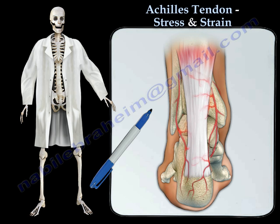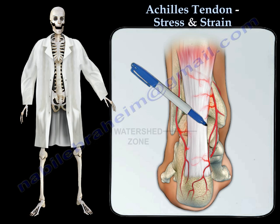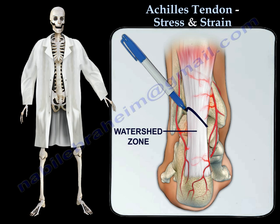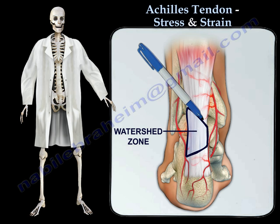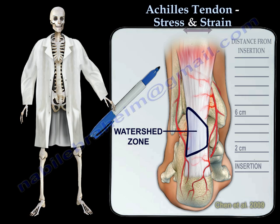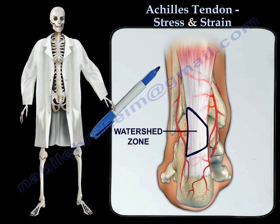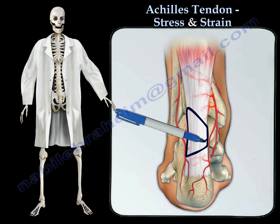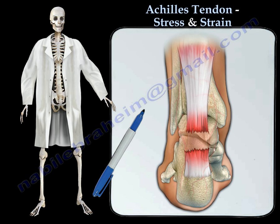Like all tendons, the Achilles tendon does not have great vascularity. The watershed zone is the part of the tendon that has the worst blood supply. This is a very narrow area in width, between 2 to 6 centimeters proximal to the calcaneus. The Achilles tendon is prone to tendonitis or tendon ruptures within this watershed zone due to limited blood supply.